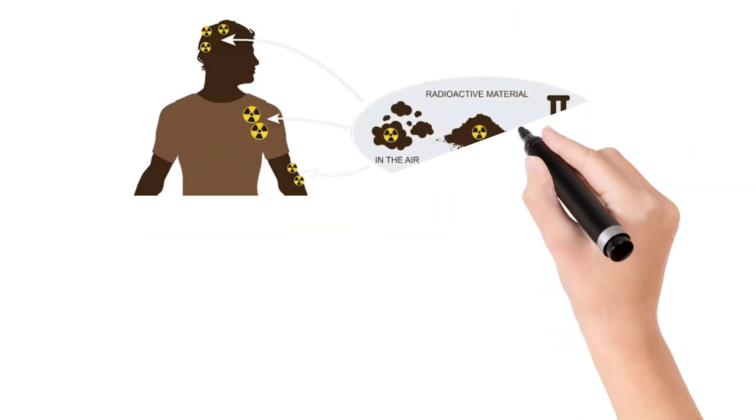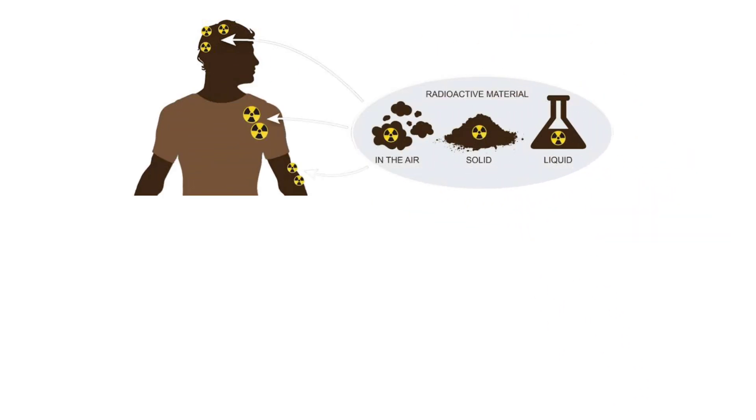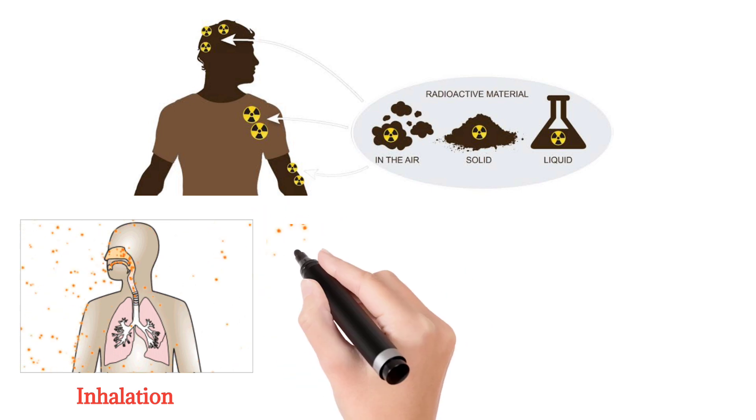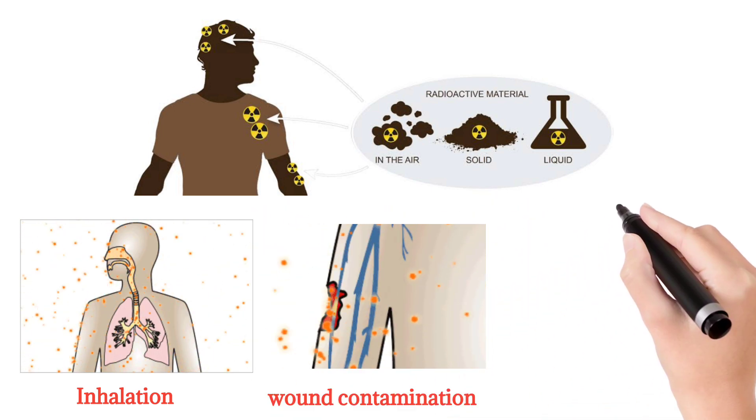Radioactive material can be in the form of solid, liquid, or gas. Through any pathway, radioactive material can enter into the body, like inhalation, wound contamination, or direct injection into the body.